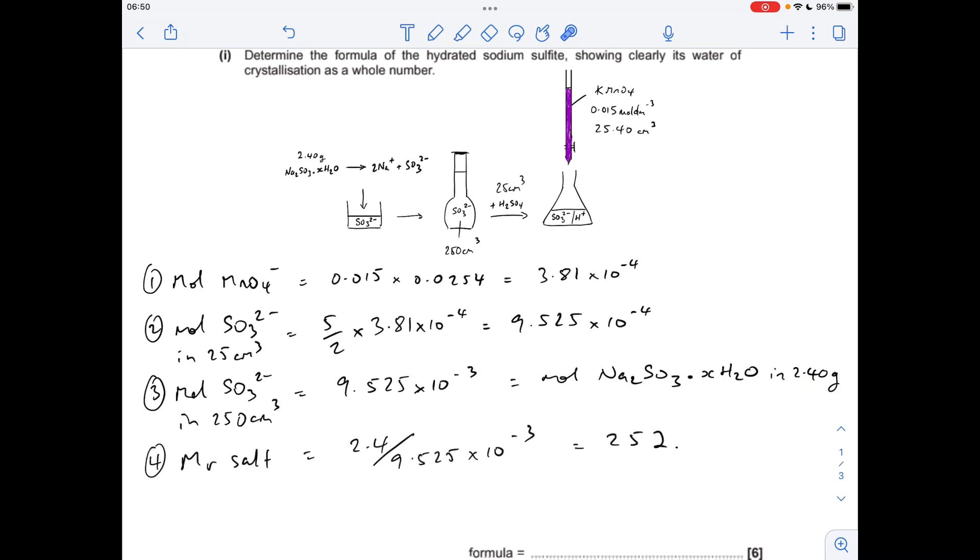So to work out the formula of the salt, the x·H2O part, we need to know the MR of the salt. Well, we can work that out now. Mass over moles: 252.